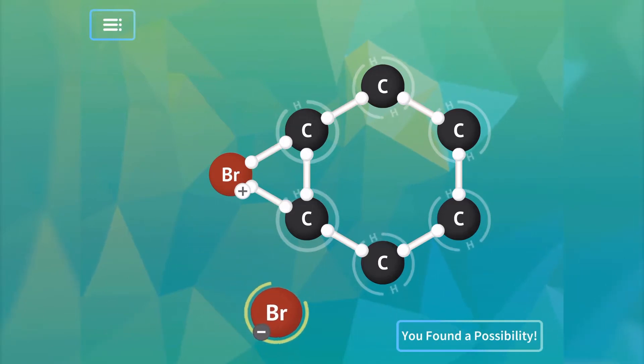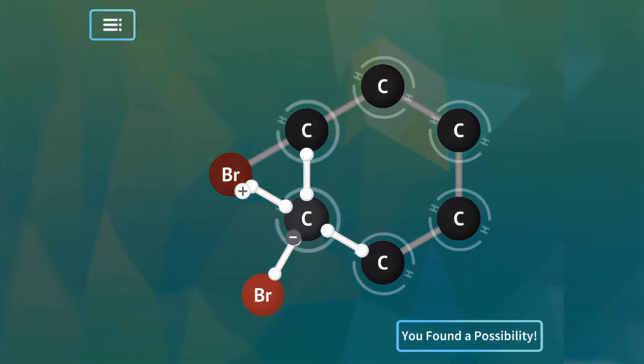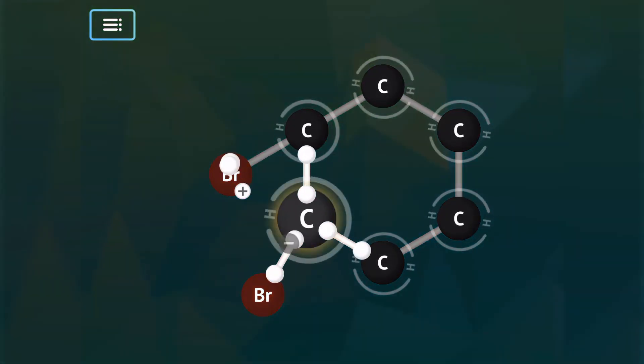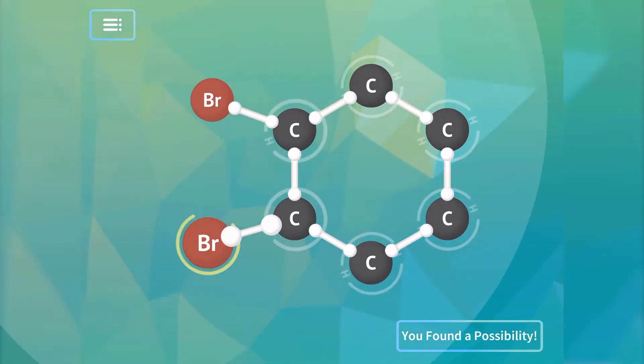The bromide ion then does a nucleophilic attack to open that ring and adds a bromine to the other side.